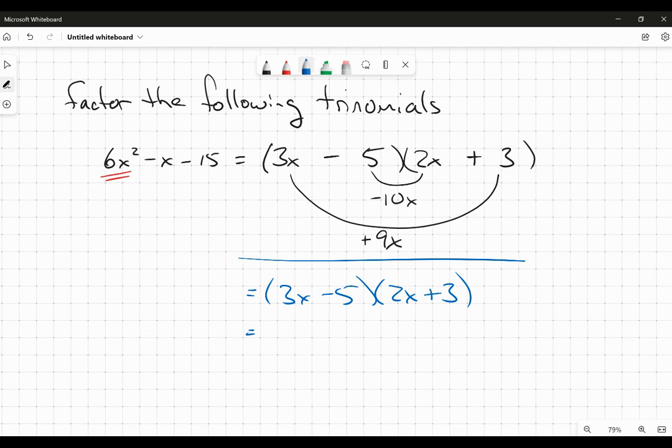So 3x times 2x is going to be 6x squared. 3x times 3 will be 9x. Negative 5 times 2 is negative 10x. And negative 5 times 3 is going to be negative 15. And that's really what I was wanting to see there. I wanted to see that that last term became a negative.